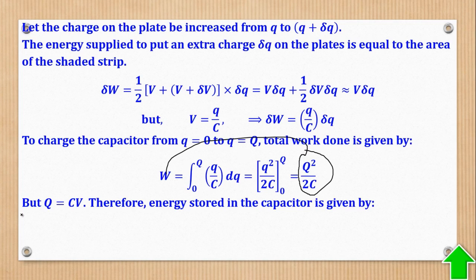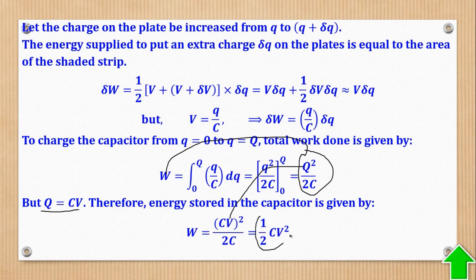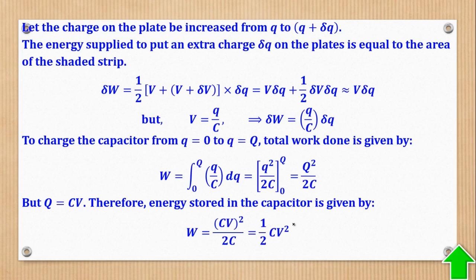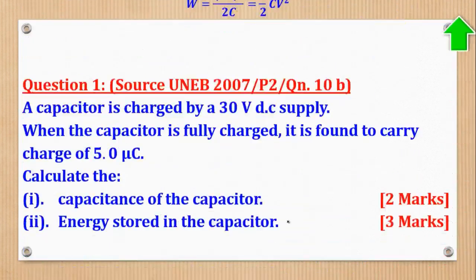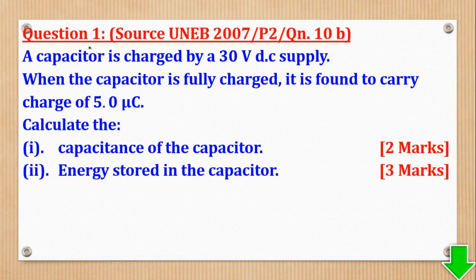There is also another form we can express this formula in. If we remember that Q equals CV, we can substitute for Q to eliminate it, and come up with the formula W equals one-half CV squared. This is another way of expressing energy stored in a charged capacitor. So we now have two expressions, and with those we can go through the questions.